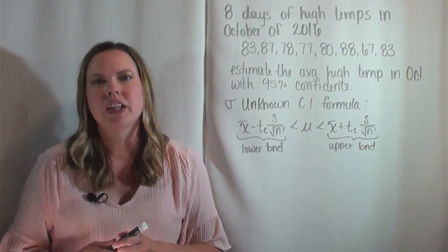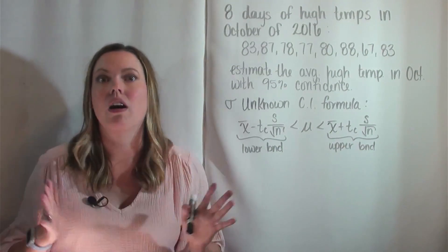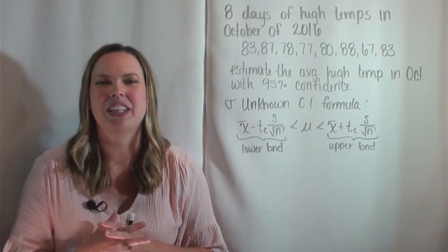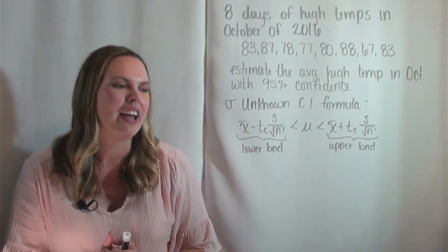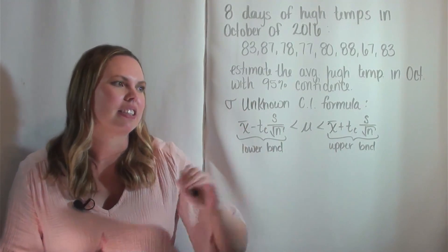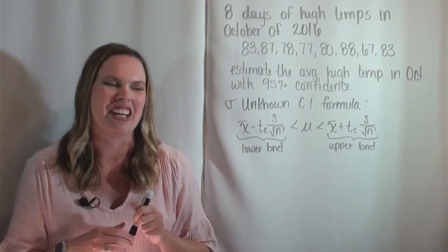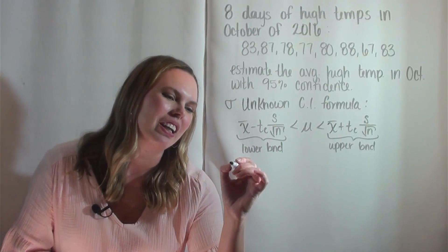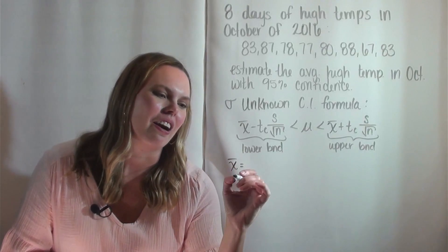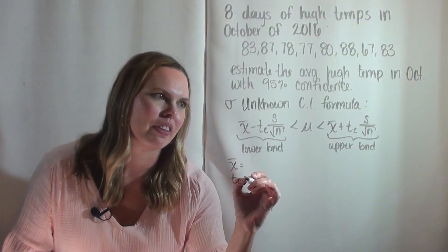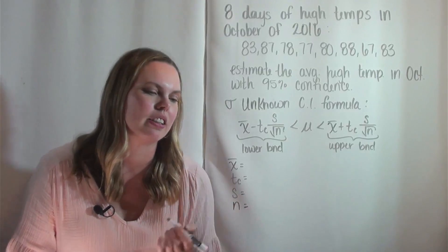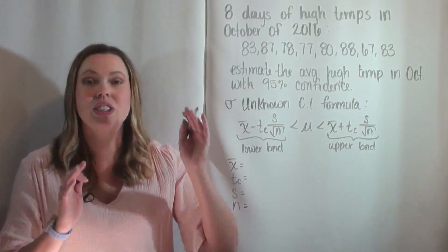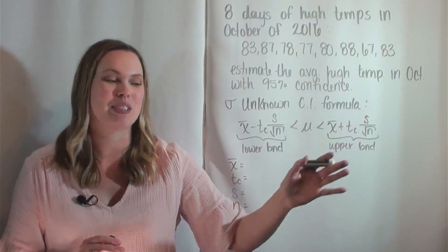So again, we're looking for an estimate of all high temperatures in October of 2016 given just eight of them, and we're using this formula for that. We need the pieces of it: we need our X bar, our T sub C, our S, and our N. We're just given raw data to find these pieces.